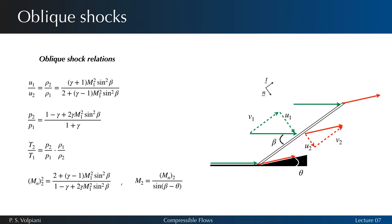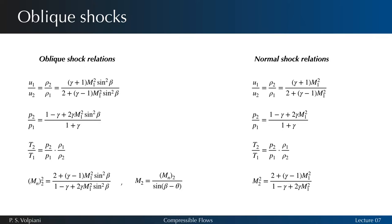We saw that to obtain the expressions for an oblique shock we had to replace M1 by M1 sinus beta in the 1D equations. Thus the changes across an oblique shock are functions of the upstream Mach number M1 and the shock angle beta. The normal shock is a special case where beta equals 90 degrees.